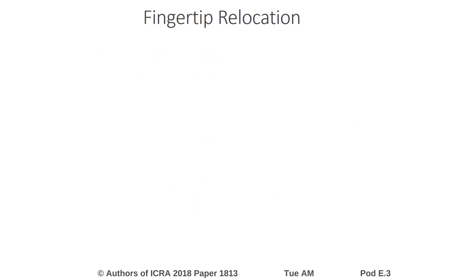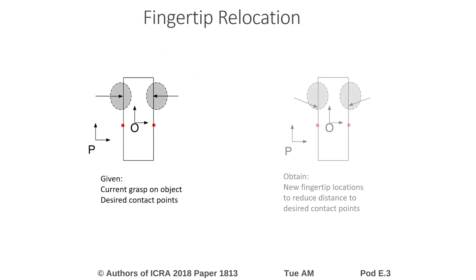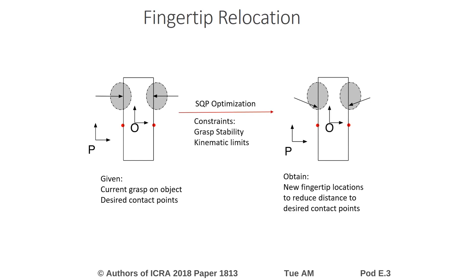The goal of the first in-hand manipulation primitive is to relocate the fingertips on the object to reduce the distance to the desired contact points. We approach this problem as an SQP optimization with constraints on grasp stability, kinematic limits, and ensuring the fingertip is in contact with the object while the other links of the finger are not in contact.